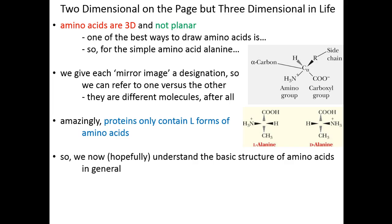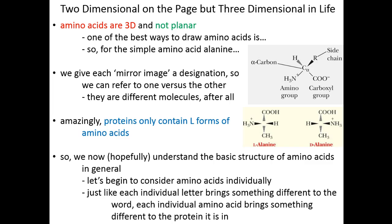So hopefully now we have a better understanding of the basic structure of amino acids for constituent groups, amino groups, carboxy groups, free protons, and the variable group. And we understand a little bit about the three-dimensional organization and the chirality of amino acids. So let's start to talk about amino acids individually instead of the characteristics that they share as a group. Just like each individual letter brings something different to the word it is part of, a hard sound, a soft sound, a vowel sound, each individual amino acid also brings something different biochemically to the protein it's part of.